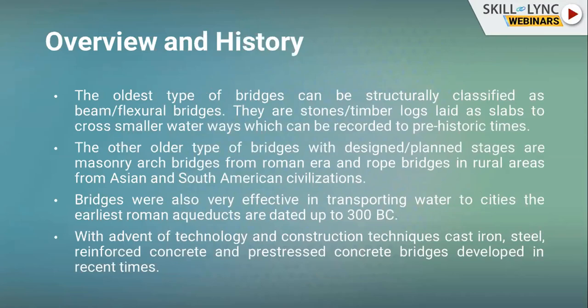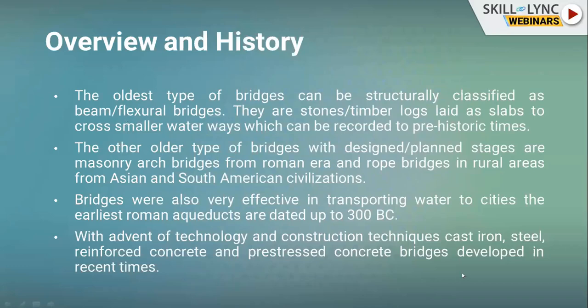The oldest form of bridges are flexural or beam-type bridges — timber logs or stones simply laid over a small stream or obstacle, used since prehistoric times. After that, arches came in; Romans started developing arches very early, and Roman aqueducts are dated back to the third century BC. We can also see root bridges and cable bridges that have existed for a very long time in Asia and rural South America.